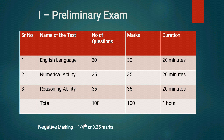जब आप English section solve कर लेते हैं, उसके बाद वापस आप पीछे नहीं जा सकते। अगला section start हो गया, जैसे Numerical Ability, तो उसके बाद पीछे जाना possible नहीं है। आपको जो 20 minutes हैं वो उसी section को पूरे देने पड़ेंगे। इसके अलावा हर एक section में एक certain minimum attempts होना बहुत जरूरी है — sectional cut-offs भी रहेंगे। आप 20 minutes में दो-चार attempts करके नहीं बैठ सकते, आपको best attempts और best score देना ही पड़ेगा।